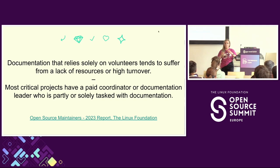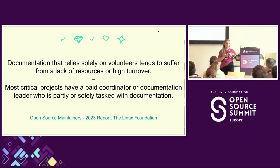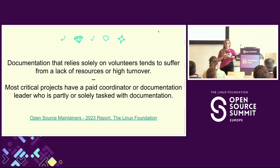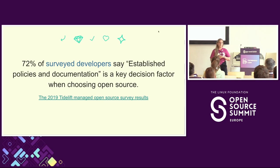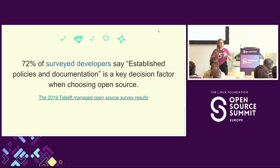Documentation often relies solely on volunteers, which is why it underperforms and might not be at the level they want. Bigger, more critical open source projects usually have a documentation leader partially or solely tasked with documentation, but not all projects can afford that. A Tidelift survey from 2019 states that 72% of developers, when selecting an open source project or library, cite established processes and documentation as a key factor.